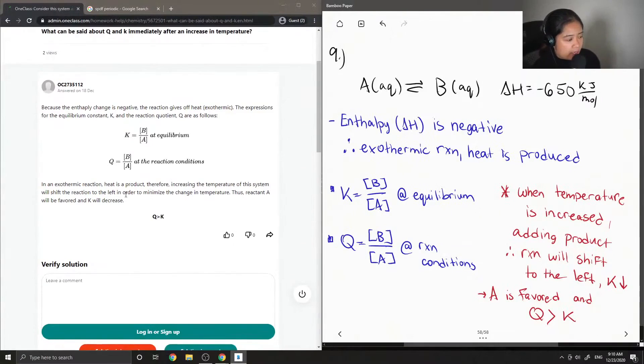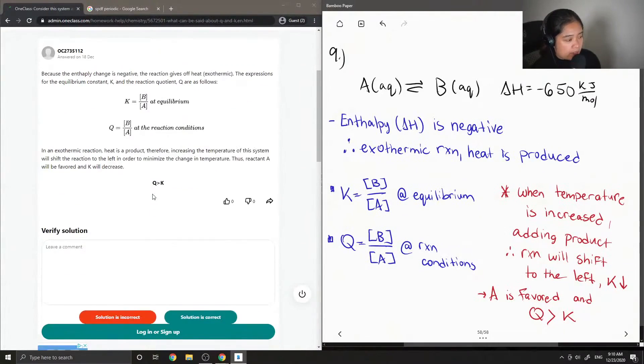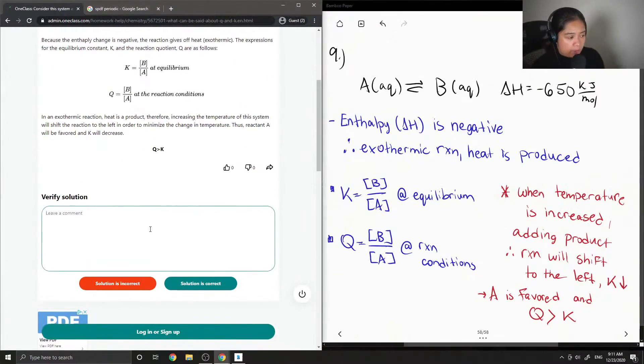In an exothermic reaction, heat is a product. Therefore, increasing the temperature of this system will shift the reaction to the left, in order to minimize the change in temperature. Thus, reactant A will be favored and K will decrease.